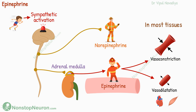Epinephrine's partner, norepinephrine, is also secreted under the same circumstances but from nerve endings. Among the two, norepinephrine is a more powerful vasoconstrictor because it does not have the vasodilation that is seen at some places with epinephrine. Thus, the duo of epinephrine and norepinephrine do a double attack on blood vessels — one marching through the circulating blood and the other through the nerves.